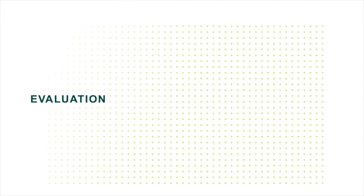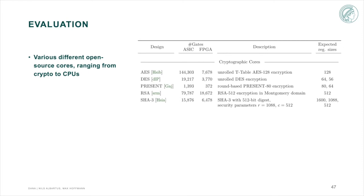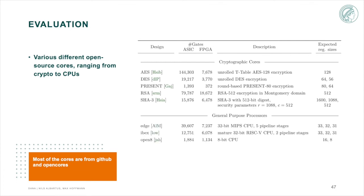Now let's get to the evaluation. As already mentioned in the beginning, we created our own benchmark suite with cores from OpenCores and GitHub. We used a wide variety of designs, ranging from 5 cryptographic cores to 3 CPUs and one real-world-like SoC, namely the OpenTitan, which is developed by the Low-Risk Initiative with supporting industry partners like Google, Western Digital. To show that DANA is actually technology-agnostic, we synthesized all cores for both FPGA and ASICs.